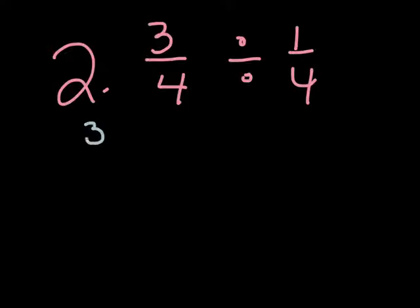3 fourths times. We have to change it to a multiplication. Then we flip our second fraction. 3 fourths times 4 over 1. That is the flip. You can see that 1 fourth flipped upside down and became 4 over 1. We never ever flip the first fraction.